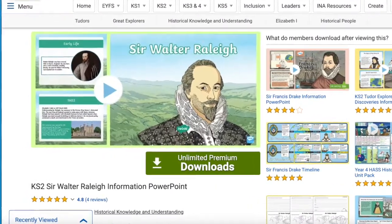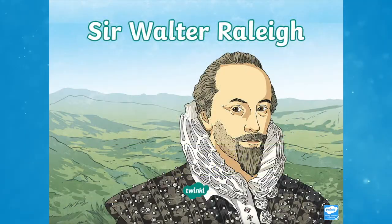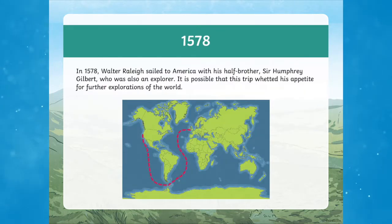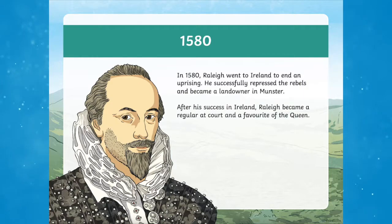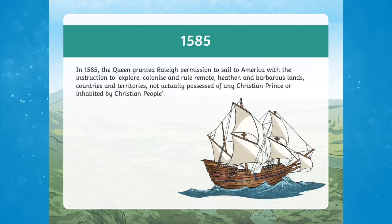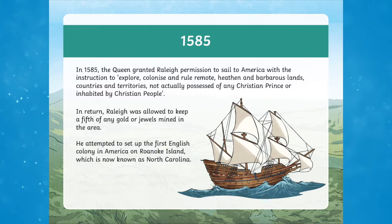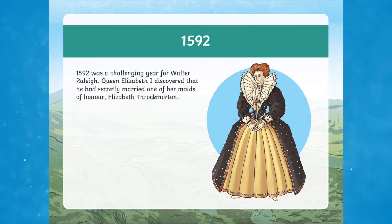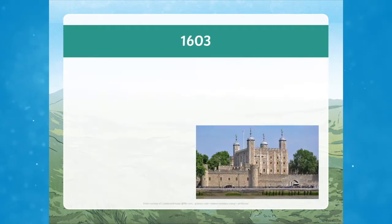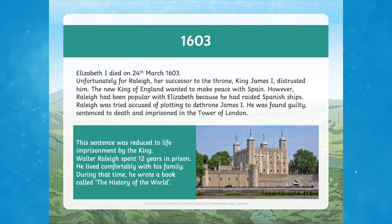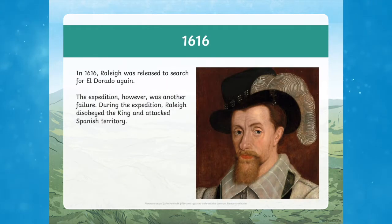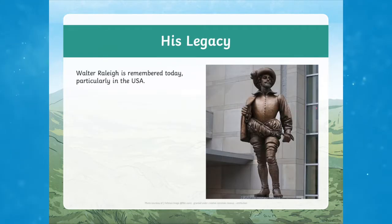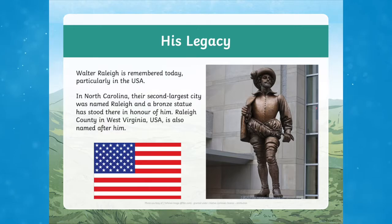Let's start with the Key Stage 2 Sir Walter Raleigh information PowerPoint. If you're looking for a helpful guide to one of the most influential explorers of the Tudor period, then this fantastic PowerPoint is just what you need. The PowerPoint covers the full scope of Raleigh's life, from his early life in military service to his expeditions to North and South America, and finally his eventual fate in the Tower of London, complete with photos, paintings, and maps to help children visualize the astonishing life of one of the early European explorers. Through PowerPoints such as this, it's a fantastic way to start introducing children to learn about the age of exploration.